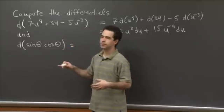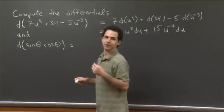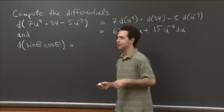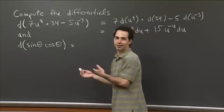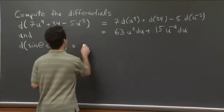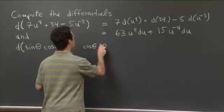OK, so we take the derivative of the first times the second. So the derivative, the differential of the first, I should say, right? So the product rule for differentials is just the same as the product rule for derivatives, except instead of taking derivatives, you take differentials. So the differential of sine theta is cosine theta d theta,